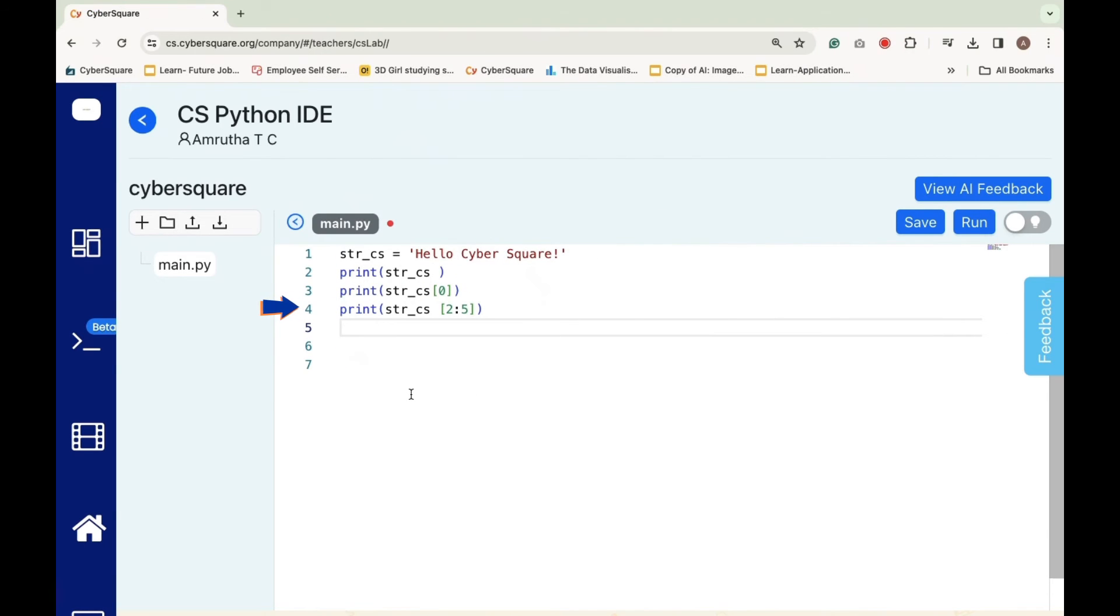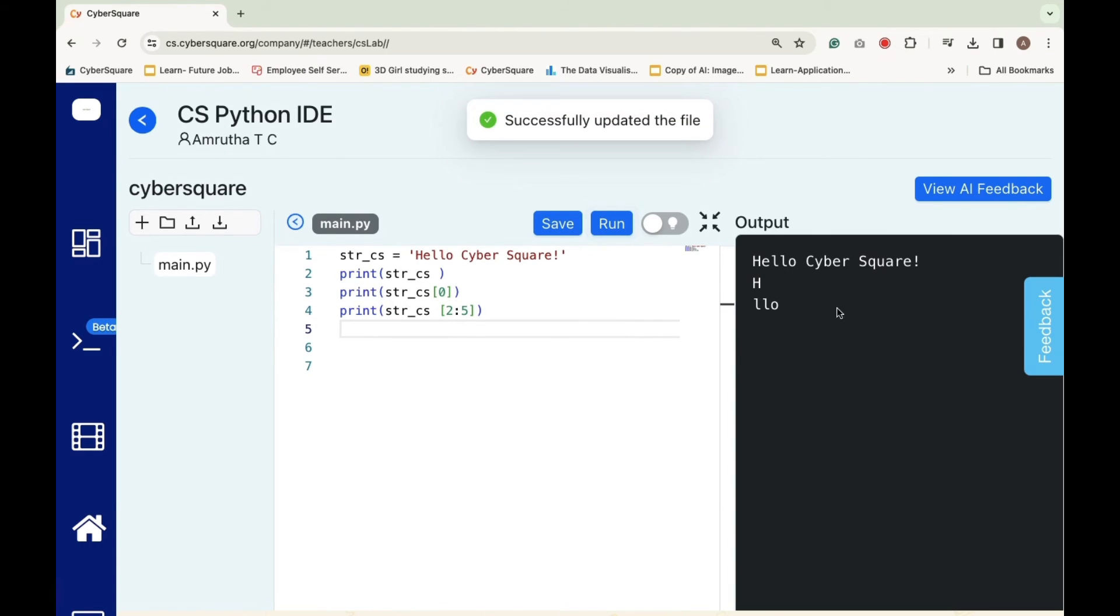Here, istr_cs[2:5] will print a substring of istr_cs, starting from the character at index 2 up to, but not including, the character at index 5.